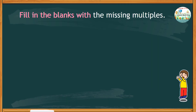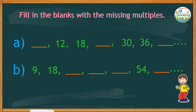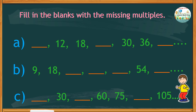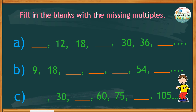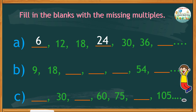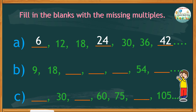Let's try working on multiples. Fill in the blanks with the missing multiples. Here is set A, set B, and set C. Just by looking at the given numbers, you can easily tell the missing multiples. For set A, the missing multiples are 6, 24, and 42. From the clue, this set shows the multiples of 6.